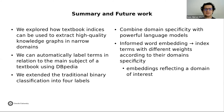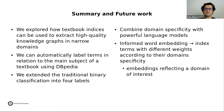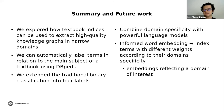To conclude, we have explored how textbook indices can be used to extract high-quality knowledge graphs in error domains. We can automatically label terms in relation to the main subject of a textbook using DBpedia, and we have extended the traditional binary classification into four different labels. In future work, we want to combine this domain specificity information with powerful language models — for example, exploring informed word embeddings where index terms can use different weights according to their domain specificity, reflecting the domain of interest in the word embeddings.